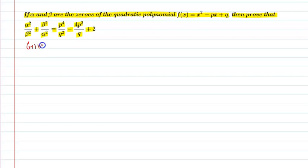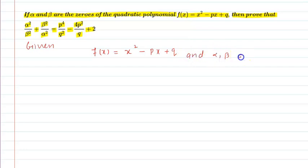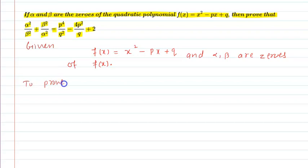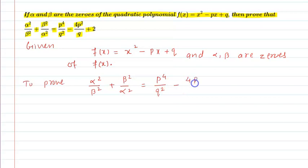So let us see the given information in this question. The polynomial is f(x) = x² - px + q, and alpha and beta are zeros of f(x). To prove: α²/β² + β²/α² = p⁴/q² - 4p²/q + 2.